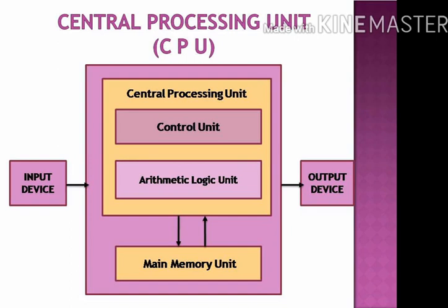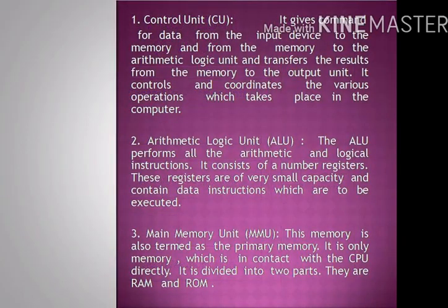CPU consists of three parts: control unit, arithmetic logic unit, and main memory unit. What is the control unit? It gives commands for data from the input device to the memory, and from the memory to the arithmetic logic unit, and transfers the results from the memory to the output unit. It controls and coordinates the various operations which take place in the computer.